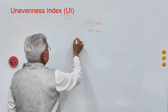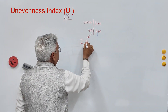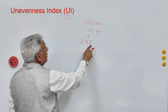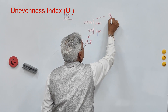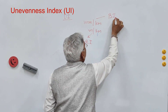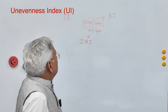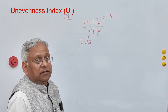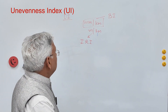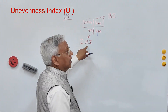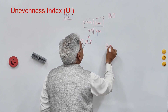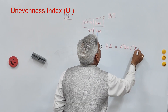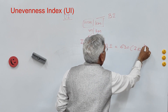When expressed in meters per kilometer, it is called IRI — International Roughness Index. When measured through a bump integrator, it is in millimeter per kilometer. The bump integrator value can be converted to IRI using the formula: Bump Integrator value = 630 × IRI^1.12.